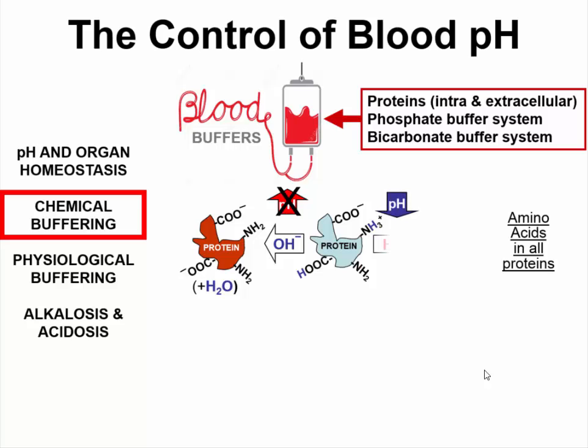Conversely, any physiological process that tries to decrease the pH — for example, the release of hydrogen ions — is met with resistance through the binding of hydrogen ions to free hydroxyl groups and amino groups of proteins. This resists the fall in pH and maintains the pH of the blood within a reasonable limit.